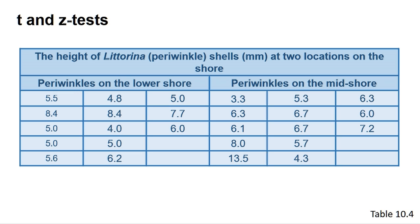The null hypothesis states that there is no difference between the mean shell height in millimetres of the periwinkles from the lower and mid-shore. The size of each sample is 13 individuals, so we would use a t-test. Table 10.3 in the book contains an enlarged data set of 30 individuals per sample, and it is common practice to use a z-test on data sets of 30 or more.